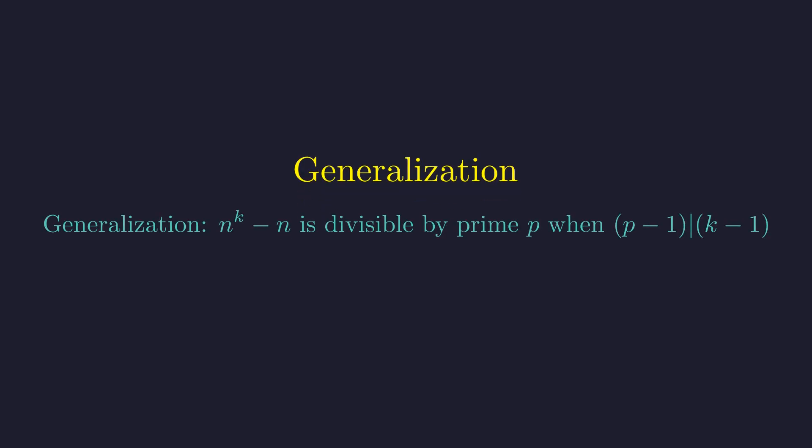Before we wrap up, I want to share something beautiful. This result is part of a much larger pattern in mathematics. The general principle is this: n^k - n is divisible by a prime p whenever (p - 1) divides (k - 1). It all comes back to Fermat's Little Theorem.